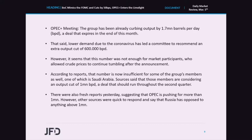Loonie and oil traders are likely to lock their gaze on the meeting between OPEC and major non-OPEC oil producing nations in Vienna. The meeting concludes tomorrow. The so-called OPEC Plus Group has already been curbing output by 1.7 million barrels per day, a deal that expires at the end of this month. Lower demand due to the coronavirus led the Joint Technical Committee to recommend an extra output cut of 600k barrels per day. However, that number was not enough for market participants, who allowed crude prices to continue tumbling after the announcement. Sources say some members, including Saudi Arabia, are now considering an output cut of 1 million barrels per day, a deal that should run throughout the second quarter.